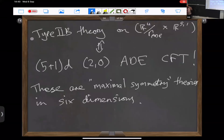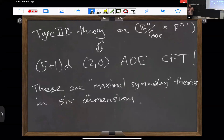In string theory, for example in type IIB string theory, looking at the same backgrounds, these same singularities give rise to maximally supersymmetric six-dimensional conformal field theories, which also have an ADE classification and are much more mysterious — they're not gauge theories but some sort of mysterious interacting conformal field theories. People take those conformal field theories and compactify them on various manifolds with various boundary conditions to construct lower-dimensional conformal field theories, like all these class S theories.